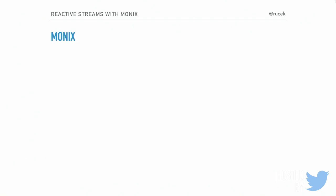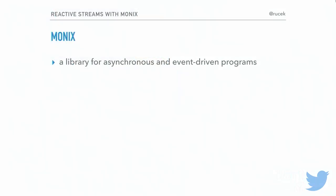Now, what is Monix? Monix is a library for asynchronous and event-driven processing. It offers a couple of abstractions. The first is Task — a lazy representation of an asynchronous computation, something like a Scala Future but better, because a Scala Future is eager: when you create one it executes immediately and you have no control over when it runs.